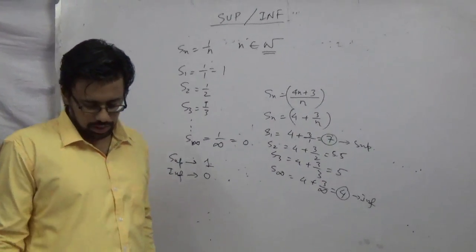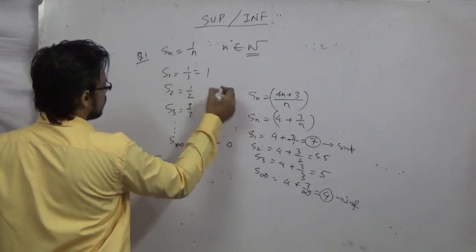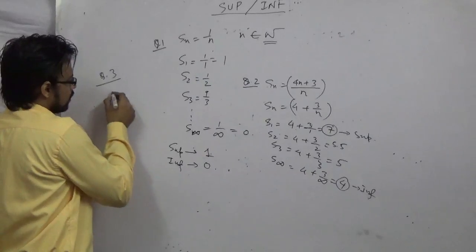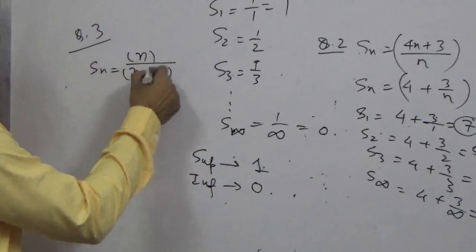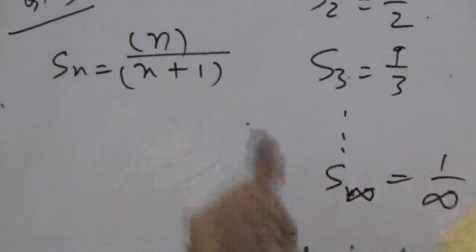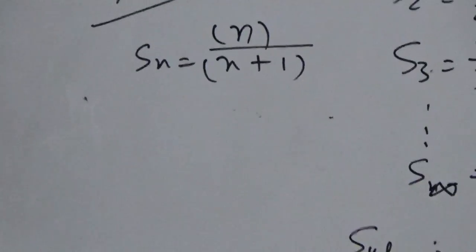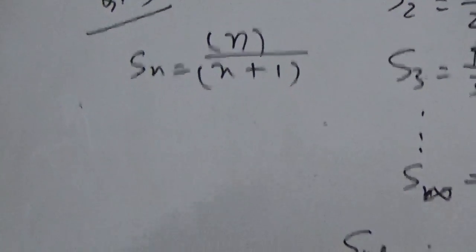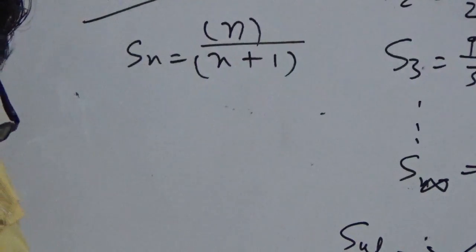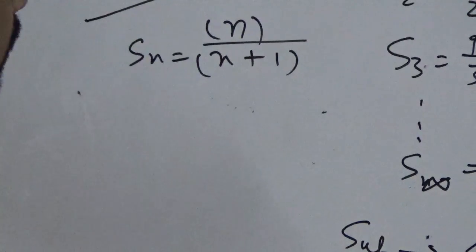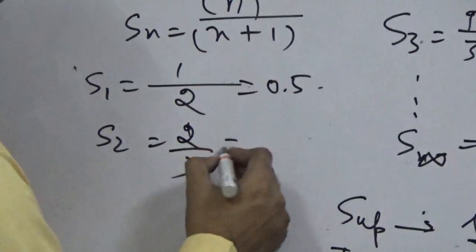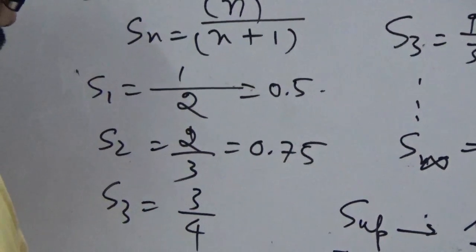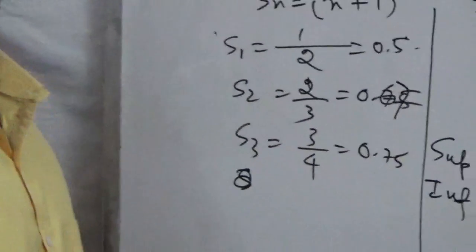Third question: S_n equal to n divided by (n plus 1). I will be doing around 15 to 16 problems. Let me check with S1 — that is 1 by 2 equals 0.5. What is S2? That is 2 by 3, which is approximately 0.67. Then S3 is 3 by 4 equals 0.75. So the values are increasing — it is an increasing pattern.